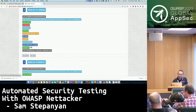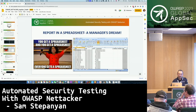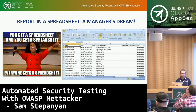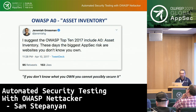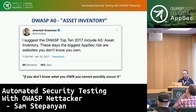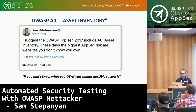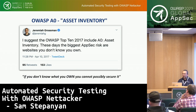Back to the presentation — the spreadsheet is great for project managers and other uses. Having full inventory of your network and vulnerabilities is important. Jeremiah Grossman — an AppSec industry veteran and the founder of White Hat Security — when OWASP Top 10 2017 was being released, tweeted suggesting OWASP include one more entry: 'A0 — Asset Inventory,' because the biggest AppSec risks are websites you don't know you own. If you don't know what you own, you cannot possibly secure it. Those who attended Tanya Jenkins' keynote will know she covered inventory as a very important topic.